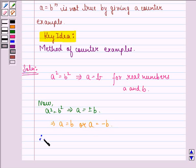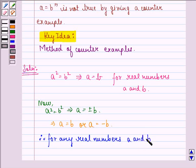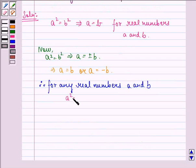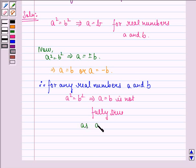Therefore, for any real numbers A and B, A square equals to B square implies that A is equal to B is not fully true. A can be true as A can be equal to minus B also. Hence, A is equal to minus B is a counter example.